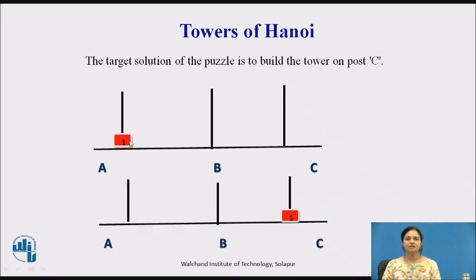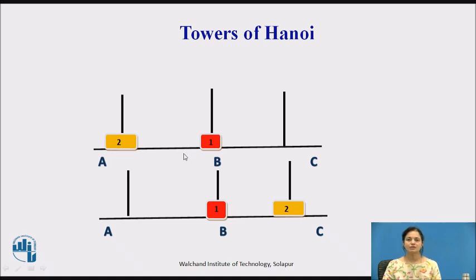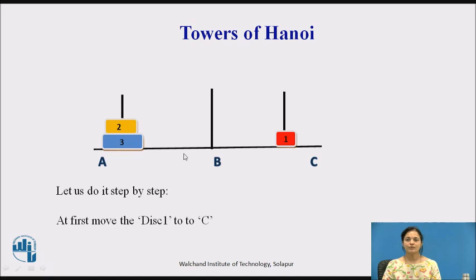When we have a single disk, we can directly move that one disk to the destination. If we have two disks, first we move the top one to the auxiliary, then move the second one to the destination, and then place the first one on top of the second. So three steps are required for two disks. As the number of disks increases, the complexity grows, so we need an algorithm.